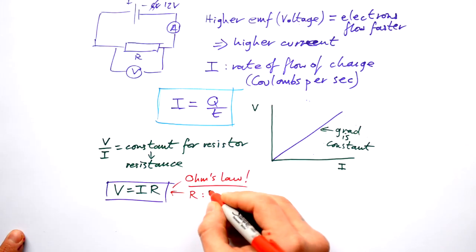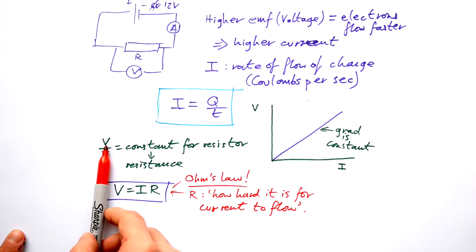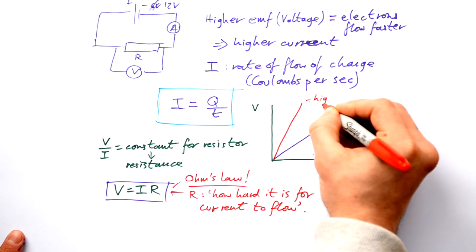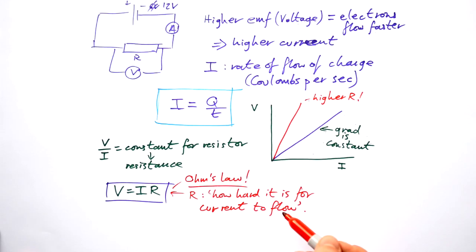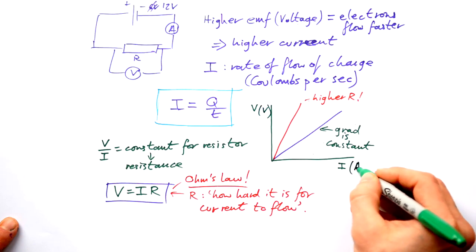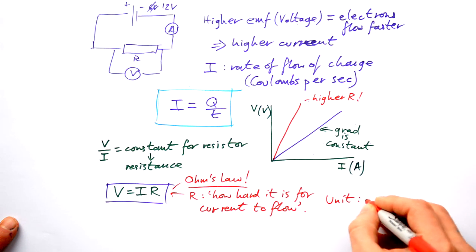And that's where our equation V equals I R comes from. And that is Ohm's law. We can think of resistance as how hard it is for current to flow through a component. So the higher the resistance, the harder it is for current to flow. In other words, you need more energy, a higher voltage or higher EMF to push the electrons through. If I was to draw a resistor that had a higher resistance on here, then they would have a steeper gradient. But for an individual resistor, we should have a straight line on a VI graph. What is the unit for resistance? We could use volts per amp, because of course the unit for voltage is volts. The unit for current is amps, but it has its own special unit. And that is the Ohm. And it's a capital Omega, which is the last letter of the Greek alphabet.